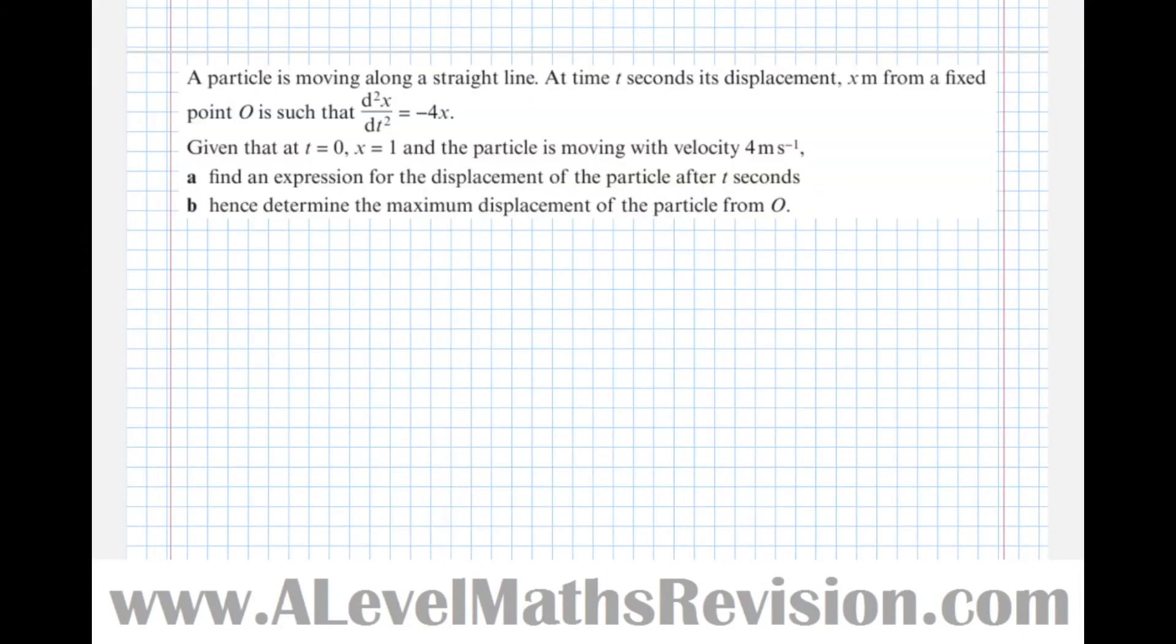Here's another more applied question. The particle is moving along a straight line at time t seconds and its displacement x metres from a fixed point O is such that d2x by dt squared equals minus 4x. Given that at t equals 0, x equals 1 and the particle is moving with a velocity of 4 metres per second, find an expression for the displacement of the particle after t seconds.